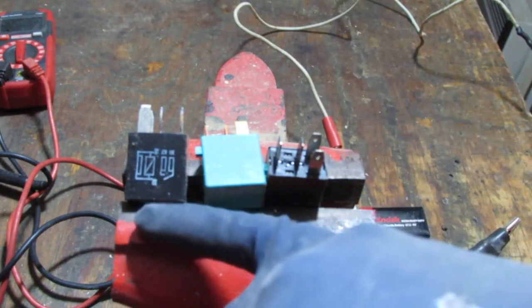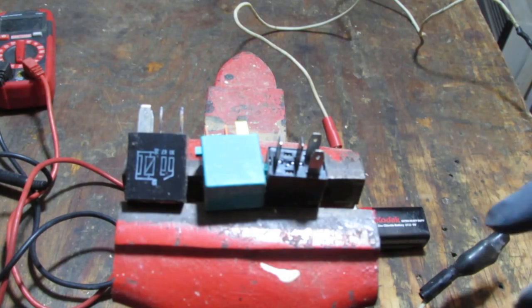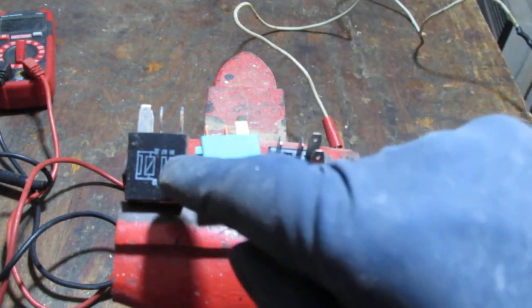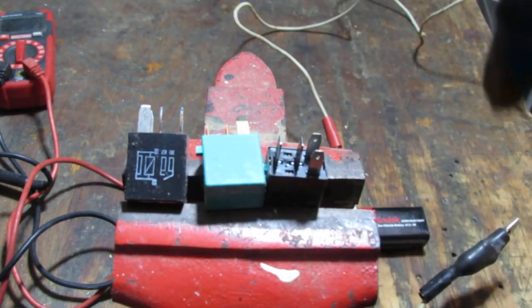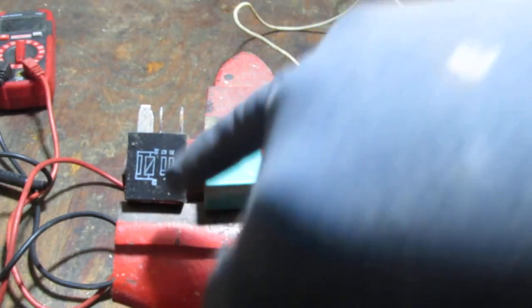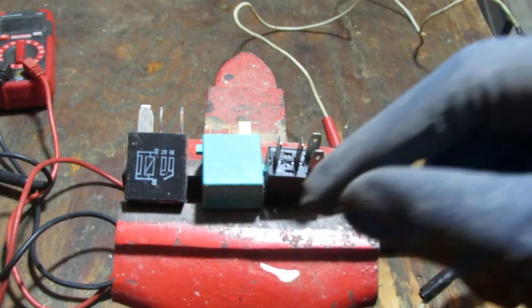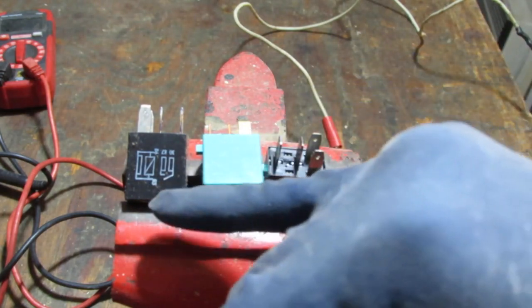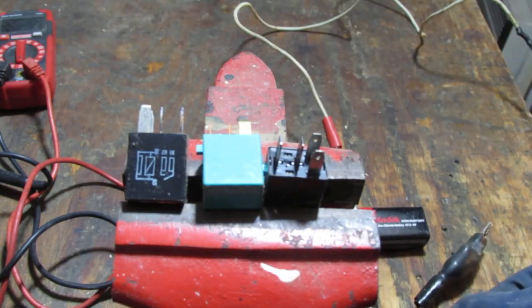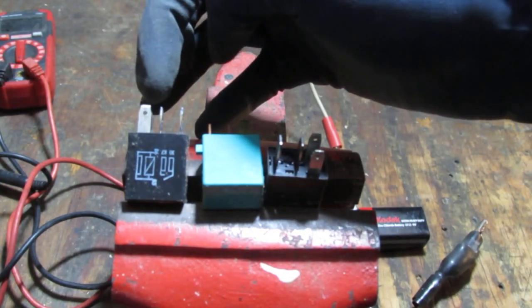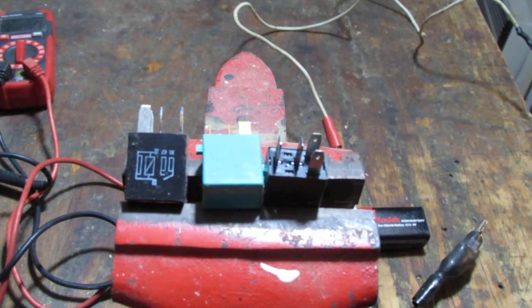Now, the side of this relay has some information. It tells you that these two here, number 30 and number 87, which are on this side right here, are both, this is an open relay circuit. You can see the little, I guess you can think of the gates open. That's what that's trying to tell you. And on this side here, these two prongs are the ones that will get powered.